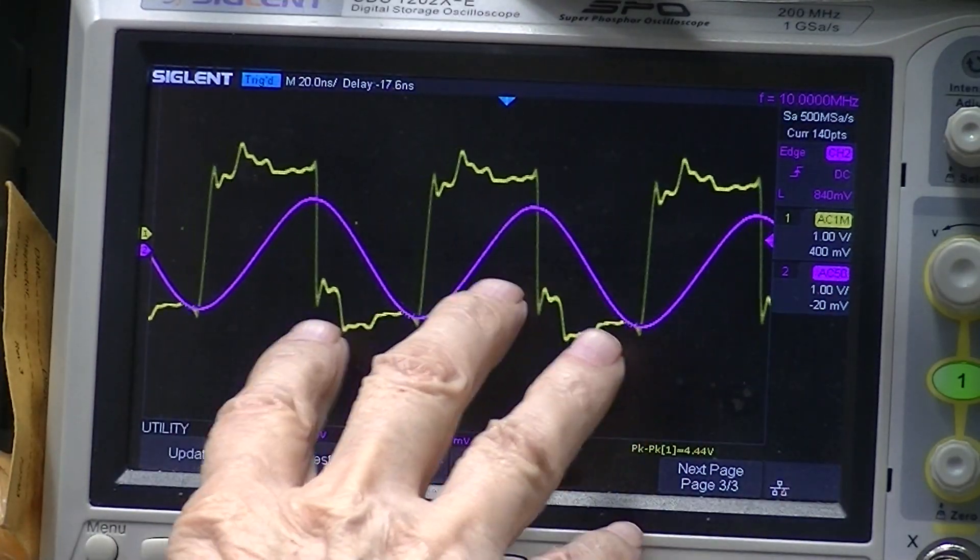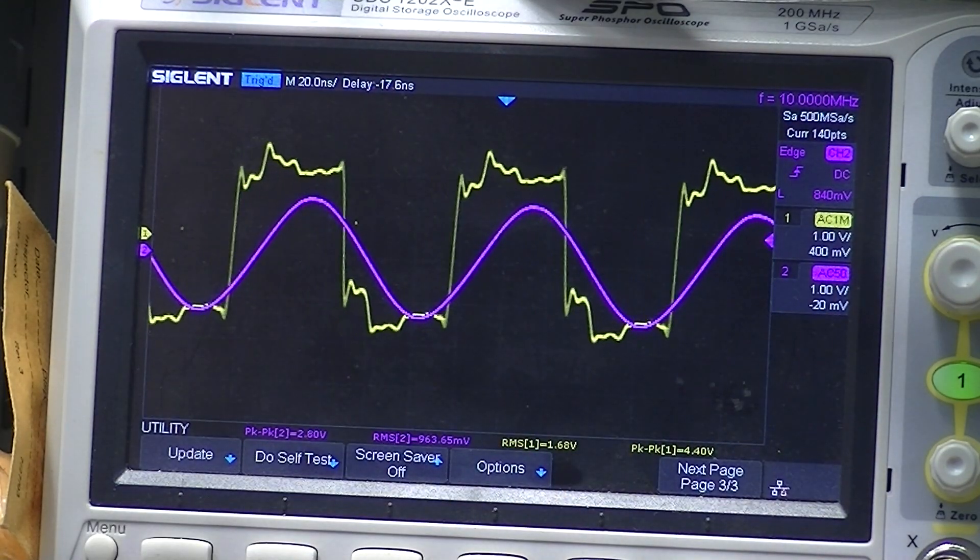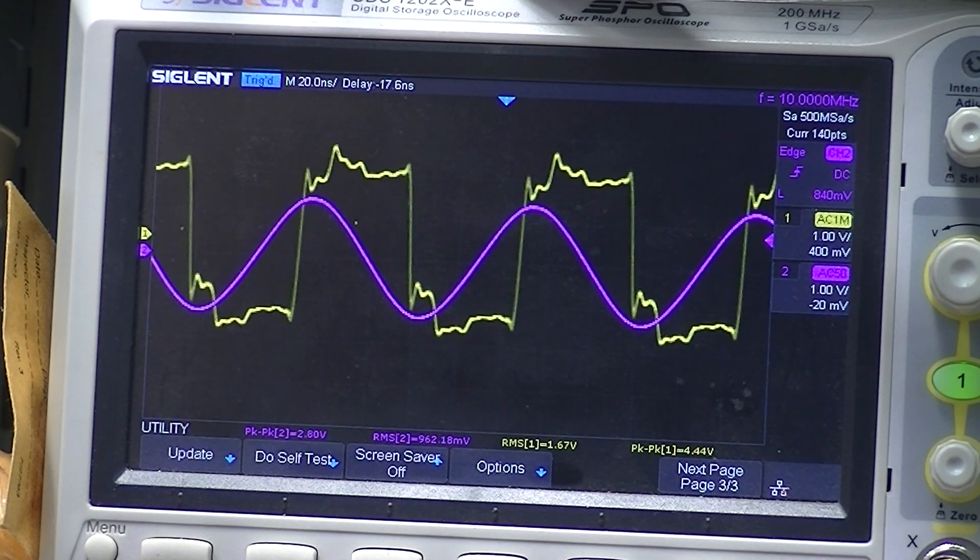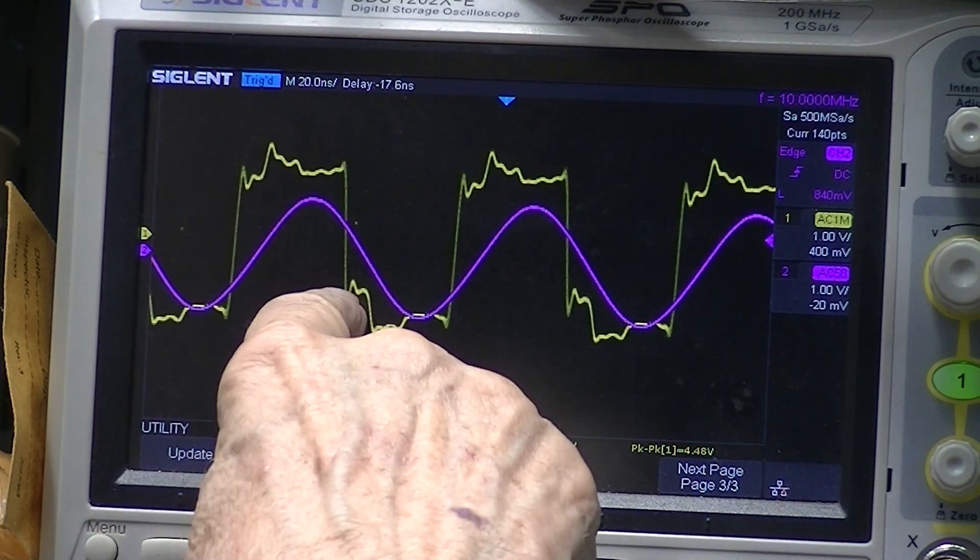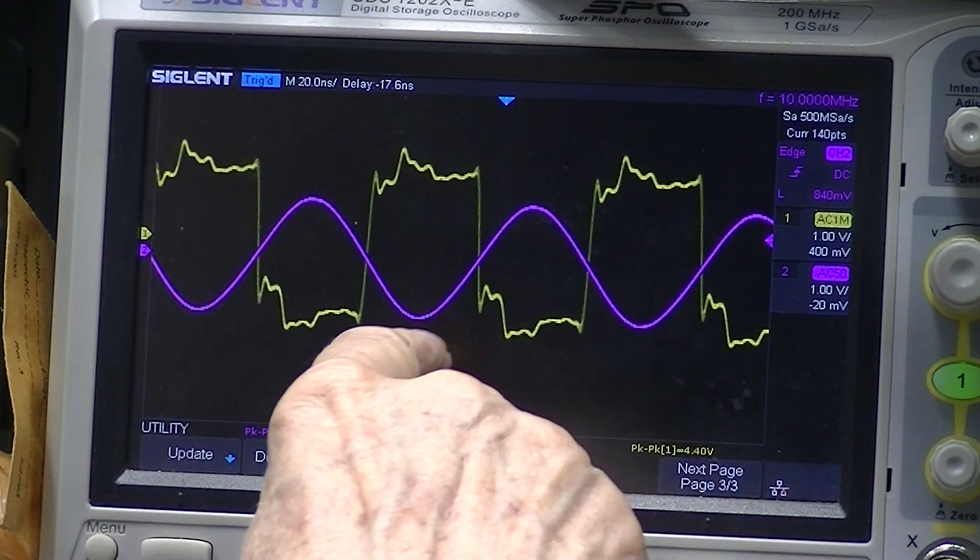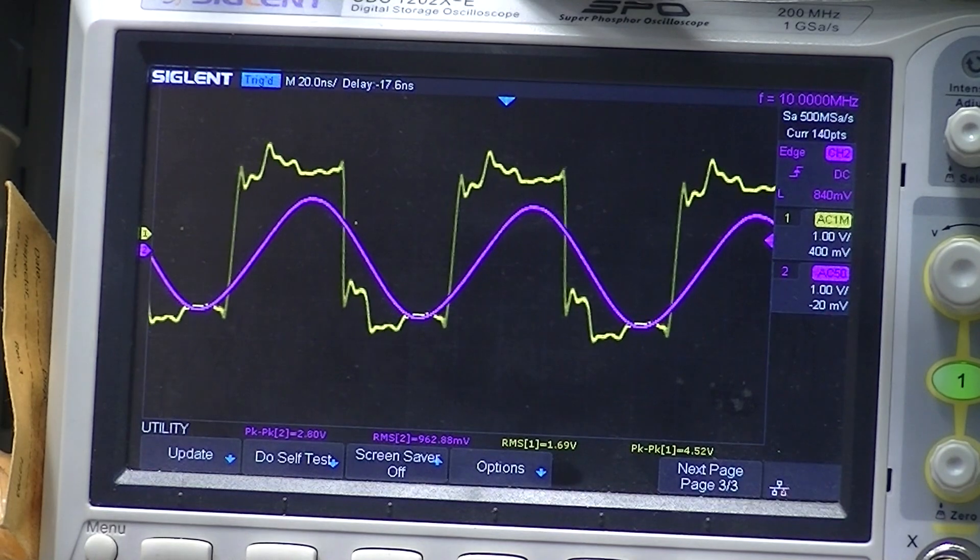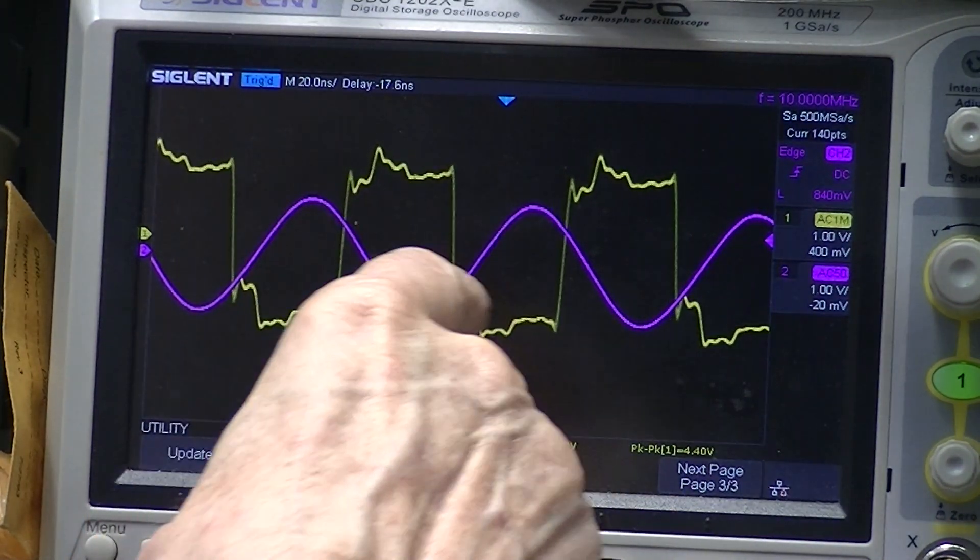Although I can compare the frequencies and maybe even match them if I slow the movement down, I cannot measure the frequency this way. However, if I knew exactly one of these signal's frequency, say 10 megahertz, I could tell if the second one matched the first one.